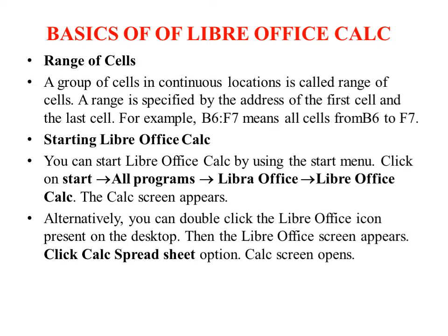Next is the range of cells. A range is a group of cells in a continuous location. The range is expressed using cell addresses, for example B6 to F7 represents a range of cells from B6 through F7.